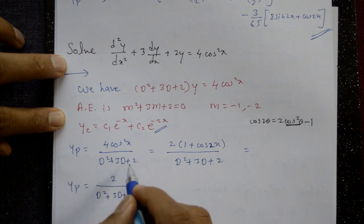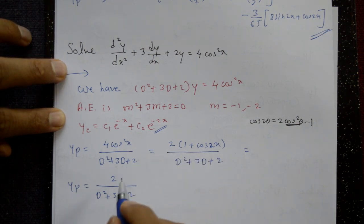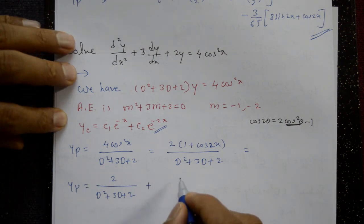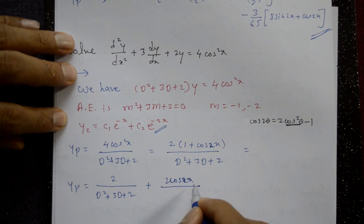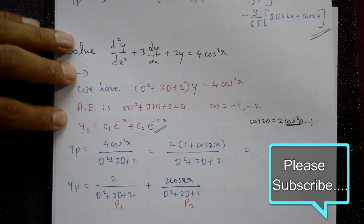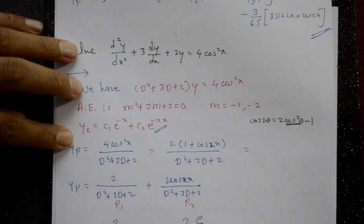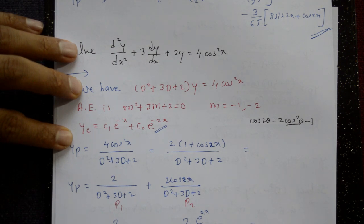For the particular integral, we have 4cos²x divided by f(D). Using the formula, 4cos²x = 2(1 + cos2x). So we write 2 + 2cos2x divided by D² + 3D + 2. Separate the terms: call the first part P1 and the second P2. P1 = 2/(D² + 3D + 2). Since 2 means e^(0·x), using Type 1 with D = a = 0, P1 = 2/(0 + 0 + 2) = 1.